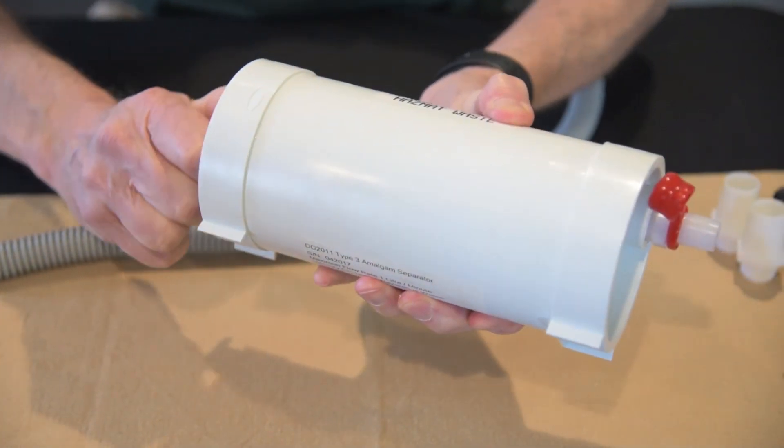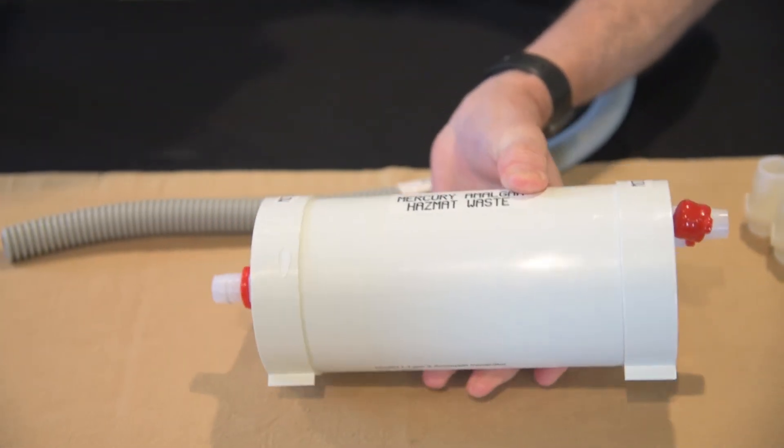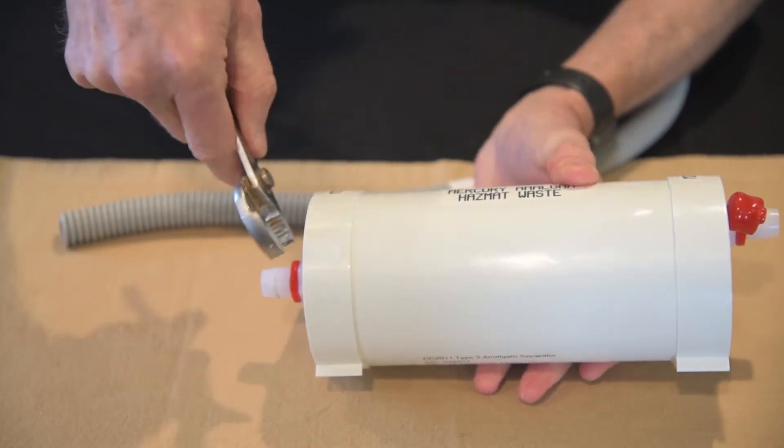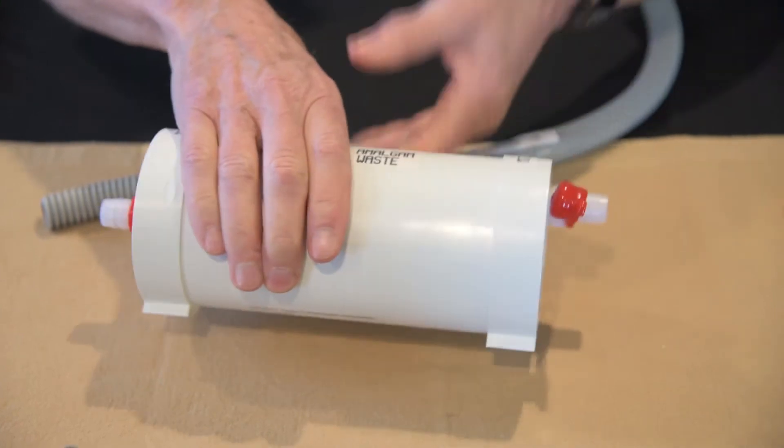You take a wrench and just snug those up a little bit. Nothing will come leaking out of this. This is a vacuum system. If anything, air would be leaking into it, not anything coming out.